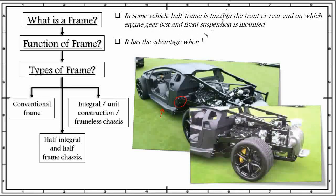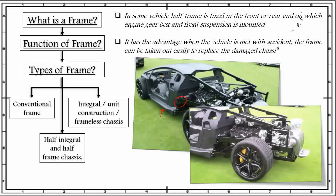It has the advantage that when the vehicle is involved in an accident, the frame can be taken out easily to replace the damaged chassis frame. As we can see, this frame part is bolted with the body, so when this vehicle is in an accident, you can easily remove this frame and you can remove the chassis components like the engine, suspension, and gearbox.